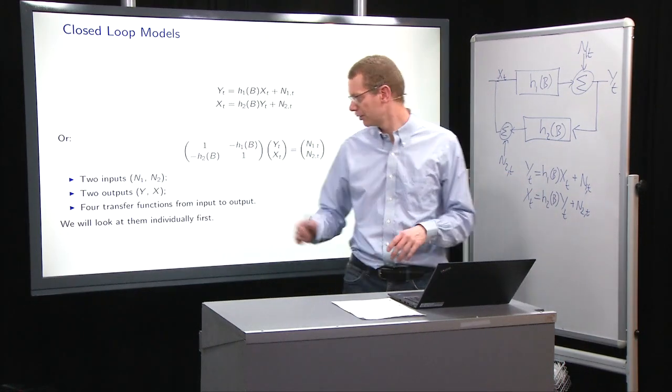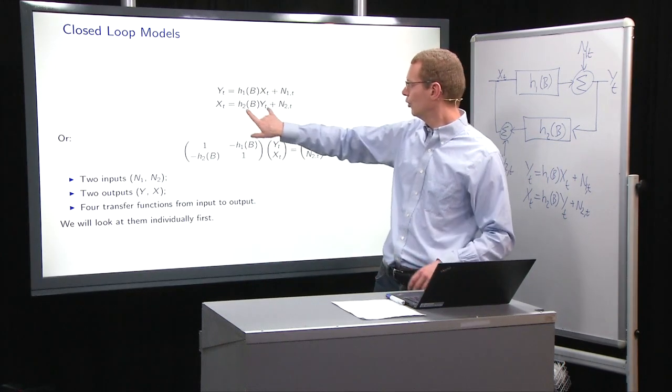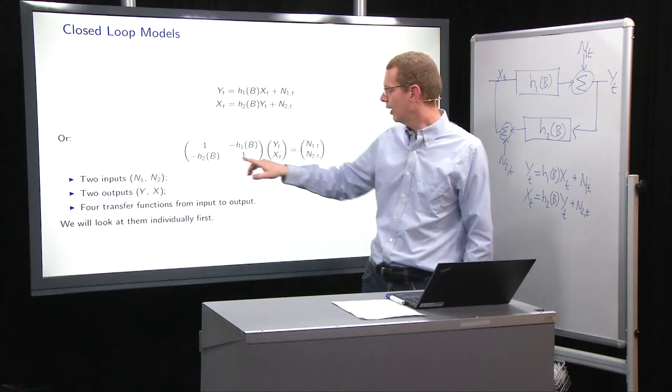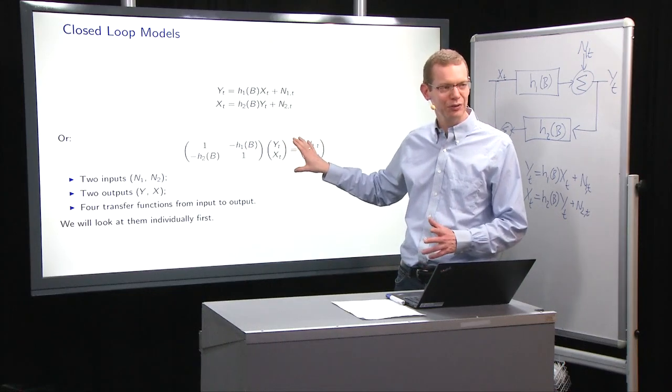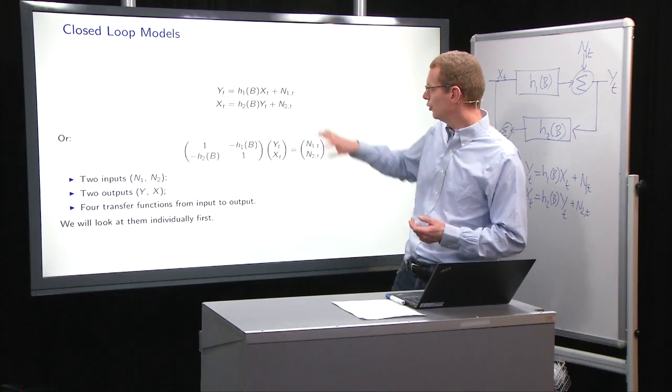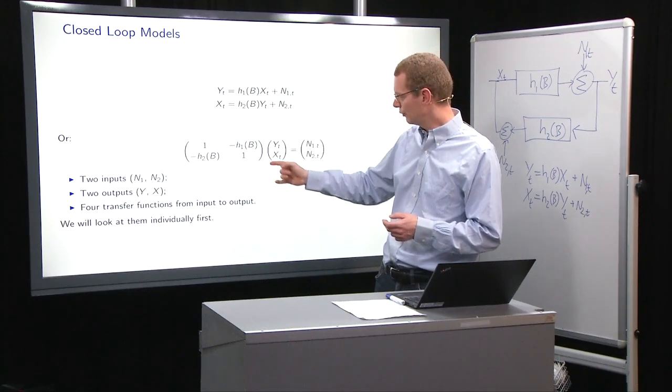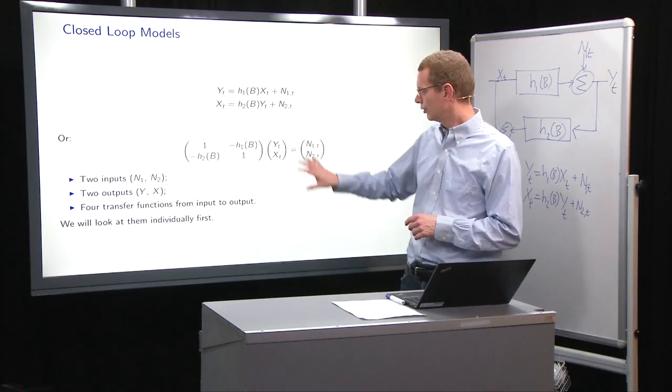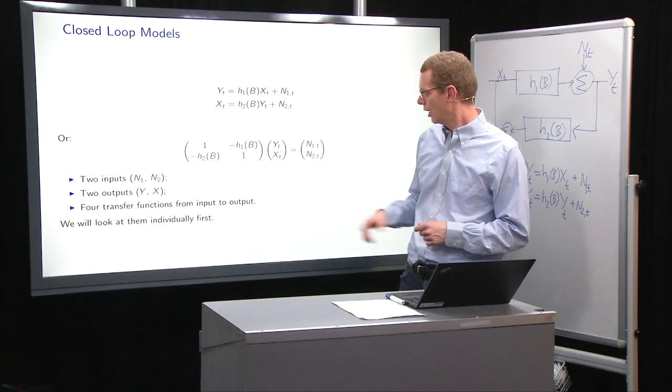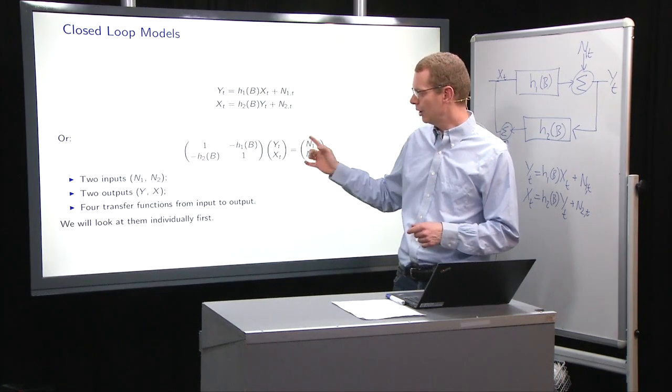Now the way we want to represent it is in the following form. We move these two terms that have to do with X and Y to the left-hand side and make it in matrix vector form. What we have now is two noisy inputs, N1 and N2, and two different states of output. This is what we call a state-based form. In total we have four different transfer functions from input to output.